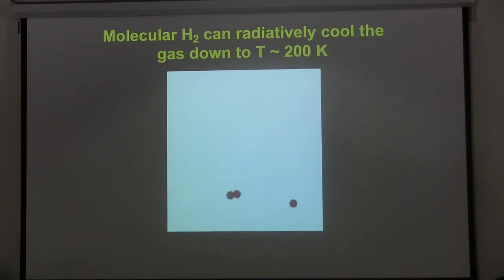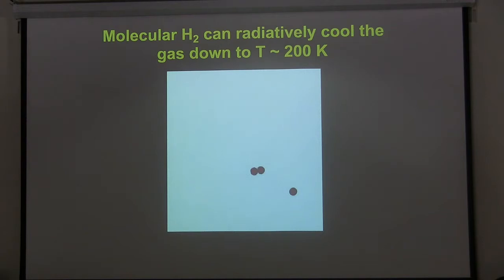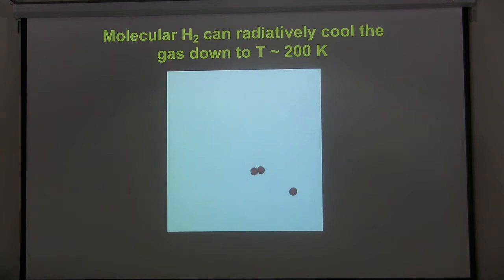This is the catalytic process by which H2 cools the clouds down to temperatures on the order of 200 Kelvin. H2 is homonuclear with no dipole moment — this is a quadrupole transition, so it's very slow. That gives a sense of how long the mean collision time is in these primordial clouds. Chemistry evolves very slowly.